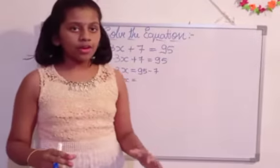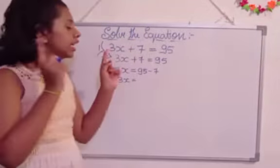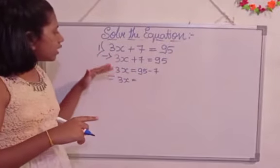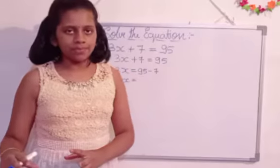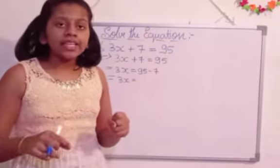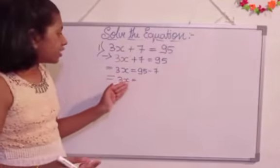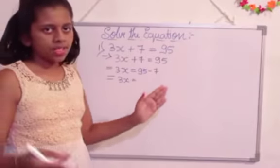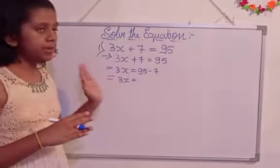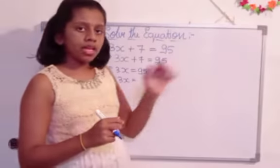Here 3x as it is we are going to write because there is no equations to solve. Only 3x is there. So 3x as it is we are going to write there. So it should be common in all the steps. Got it? So if any number containing the variable, if x, y or any variable, that should be in the first only. That is how to solve the equation. So that should be in the first only. So here 3x is equal to 95 minus 7.